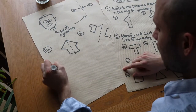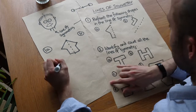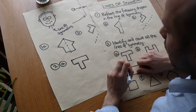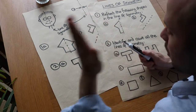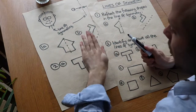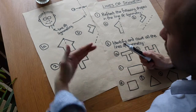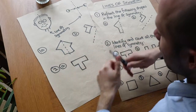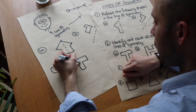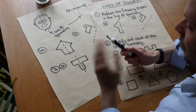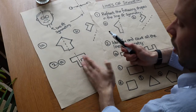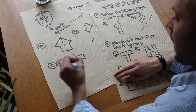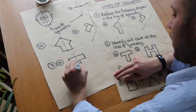Now identify and count all the lines of symmetry. We've got this T shape. I can't put a line here because you don't see the same thing on both sides. But if I put a line here, then if I flip over this side of the image I get the other side. So the T shape has one line of symmetry.